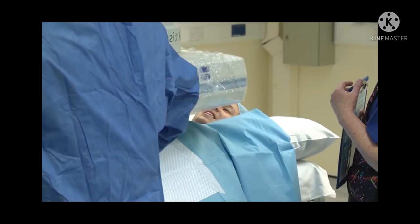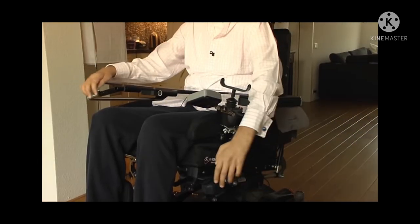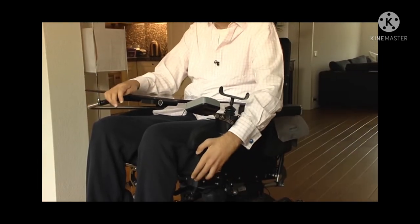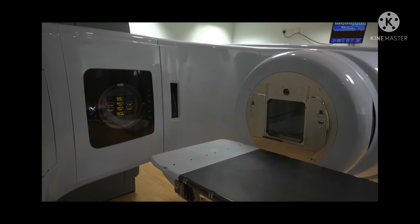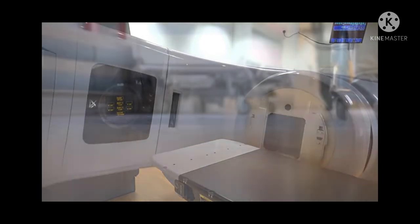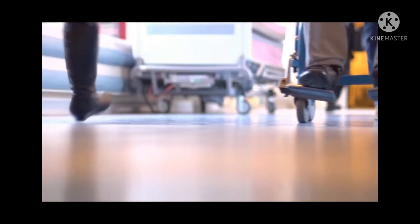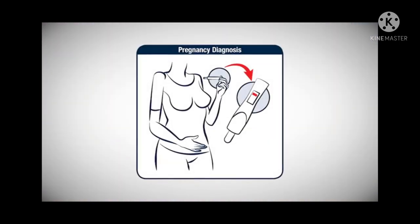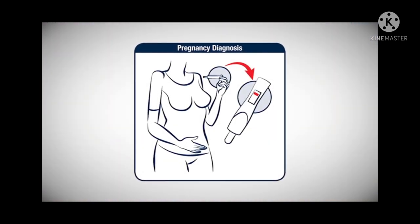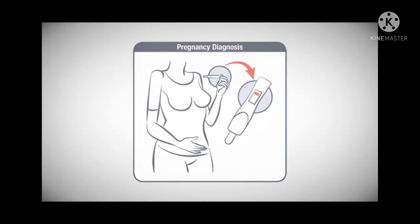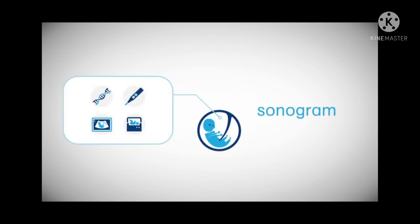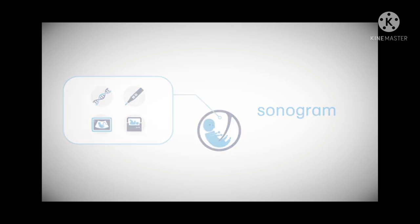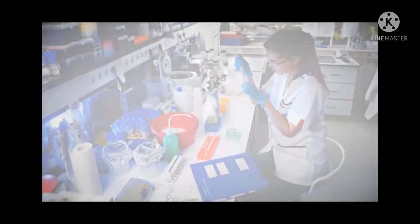Technology, on the other hand, is the application of science in ways that are considered beneficial to our society. Technology can be defined in three ways: first, as a physical artifact, machine, or an instrument; second, as an activity or a means to accomplish a goal; and third, as knowledge.